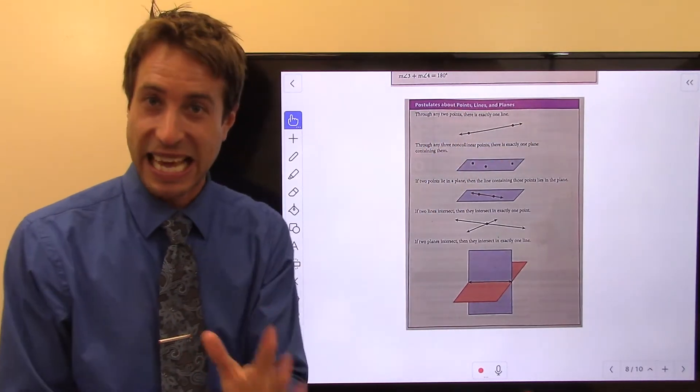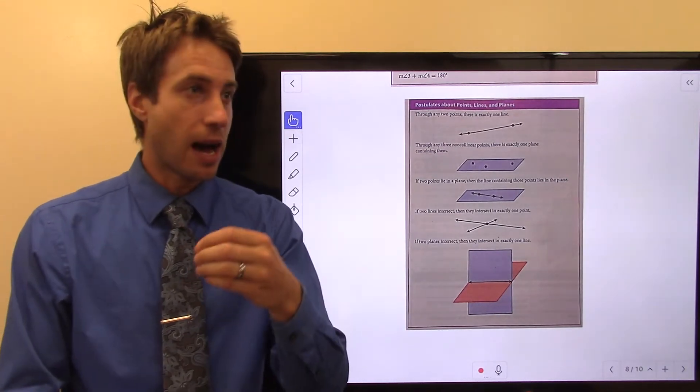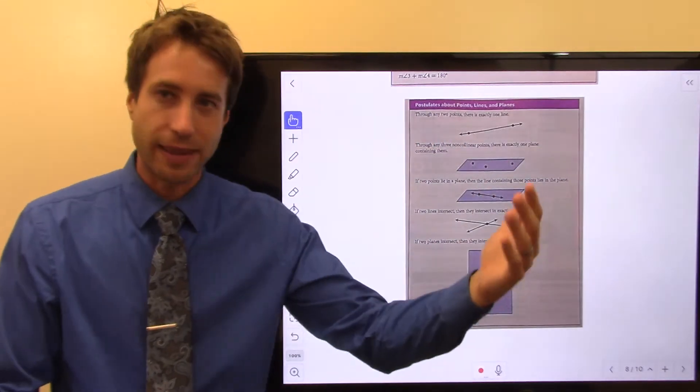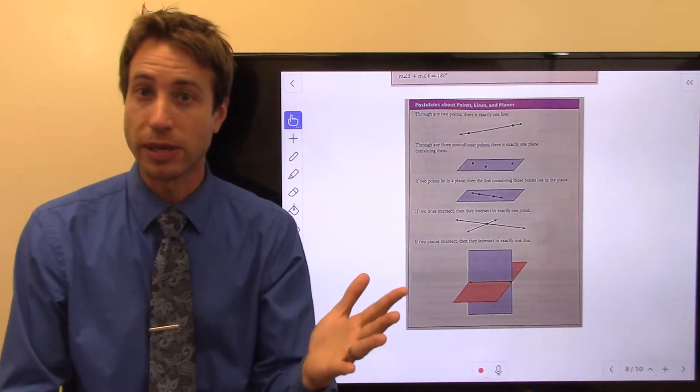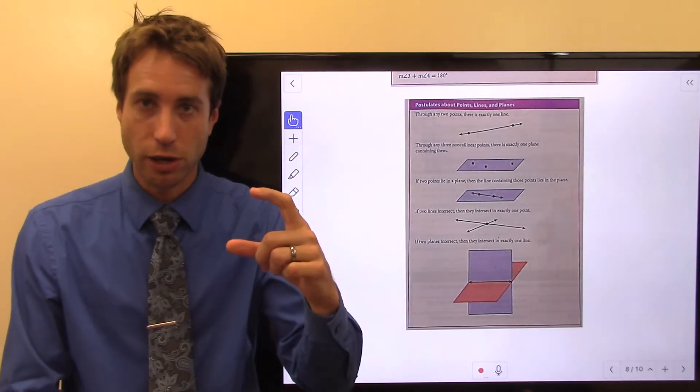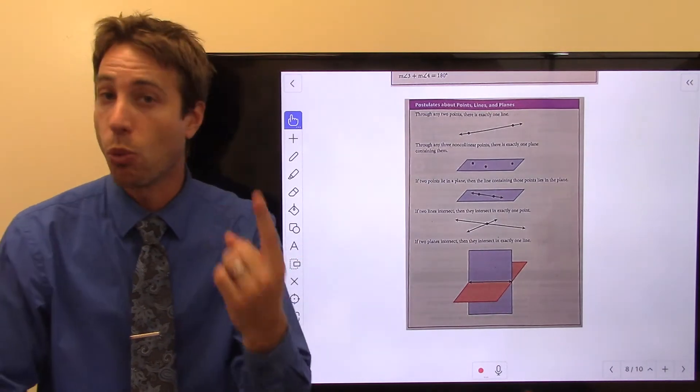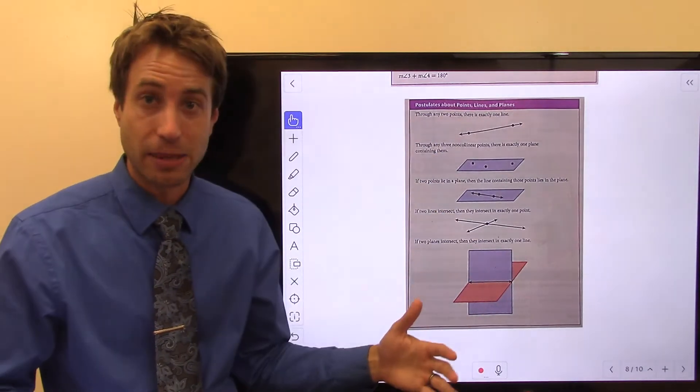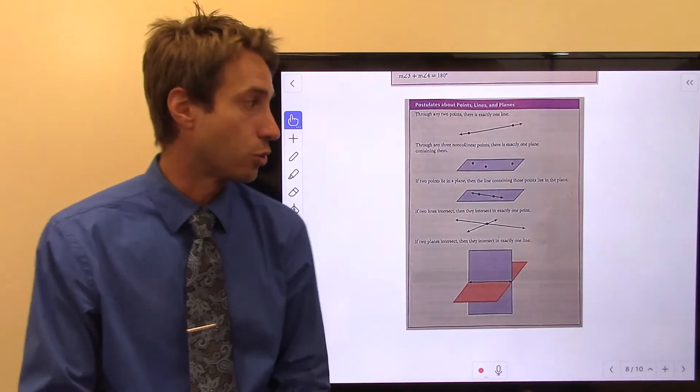Postulates about points, lines, and planes. Again, these are postulates. These are things that do not need to be proven. They're really kind of common sense things. For example, through any two points, there is exactly one unique line. In a previous section, we actually talked about that. I had you draw two points. How many different ways can you draw a line through those two points? And we talked about the fact that there's only one unique way to draw a line through any two points. That's a postulate, right? That doesn't really need to be proven. It's common sense.